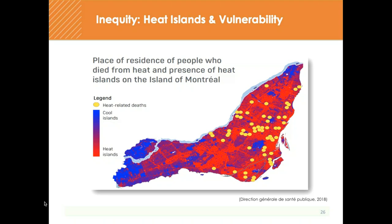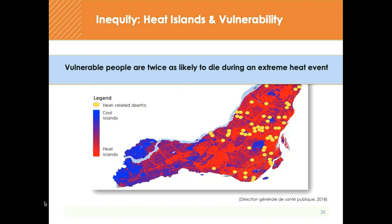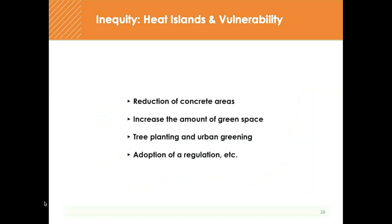This map shows that vulnerable people living in urban heat islands are almost twice as likely to die during an extreme heat event — a finding from the Montreal Regional Public Health Department. There are many ways to reduce heat islands and improve health outcomes for vulnerable people, including reduction of concrete areas, increases in green space, tree plantings and urban greening, and adoption of regulations that support enhanced greening. But it's important, as I mentioned in the citizen engagement process, to work with the people that actually live here and experience these environments to understand how, where, and why we apply these interventions.